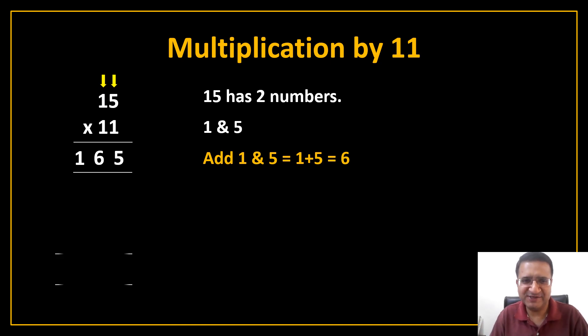Now let us take one more example. You have to multiply 315 by 11. Now just write down 3 here. This is the first digit and 5 here. This is the last digit. In earlier case, we had only 2 numbers. So we just wrote 1 and 5. Now you have to write down first digit and last digit of the number.